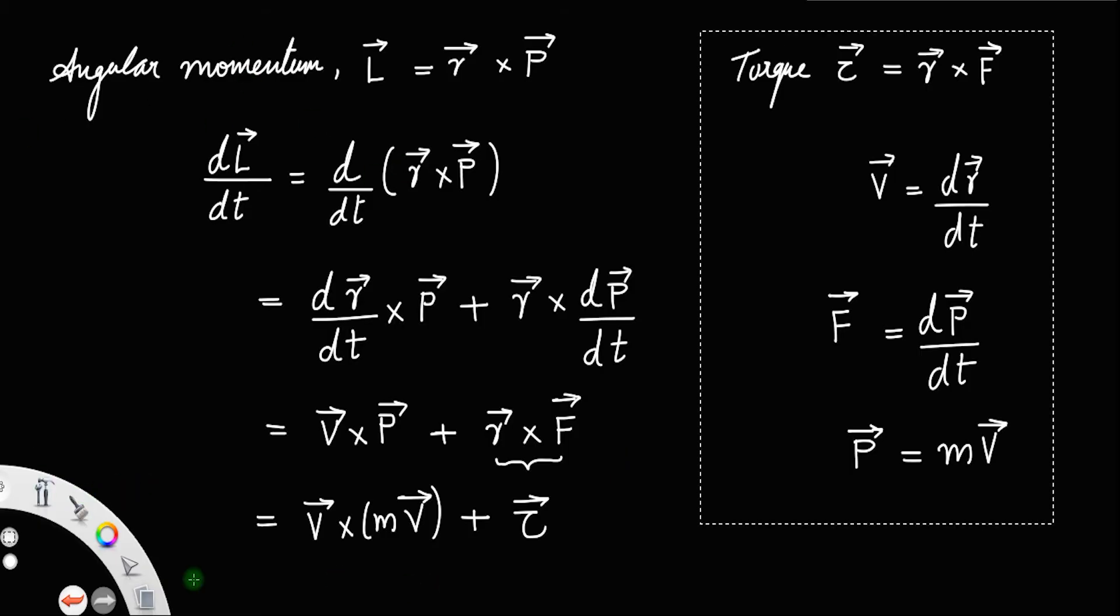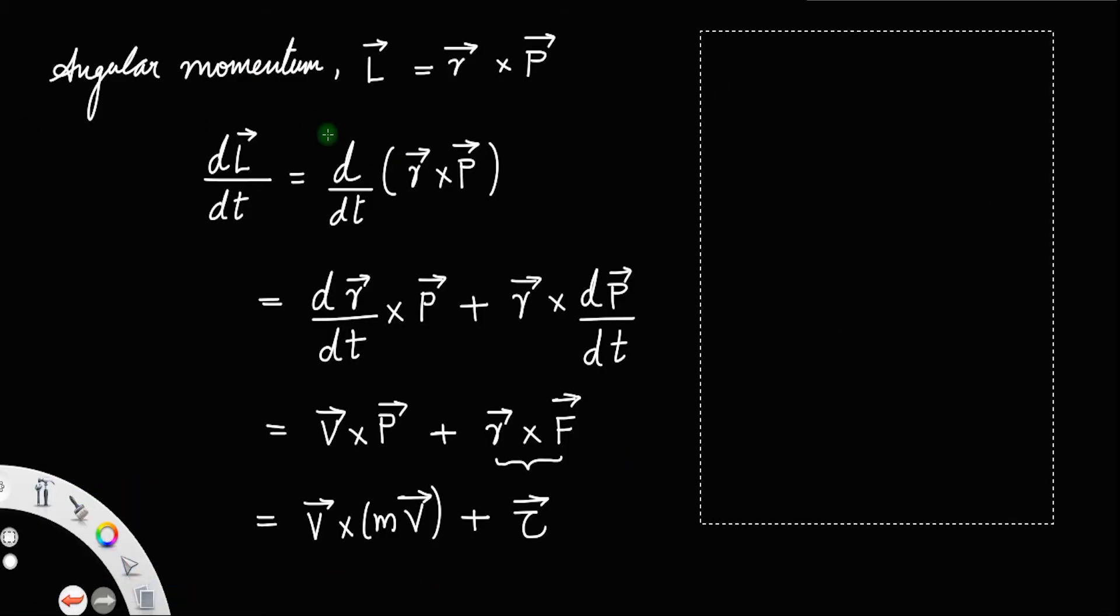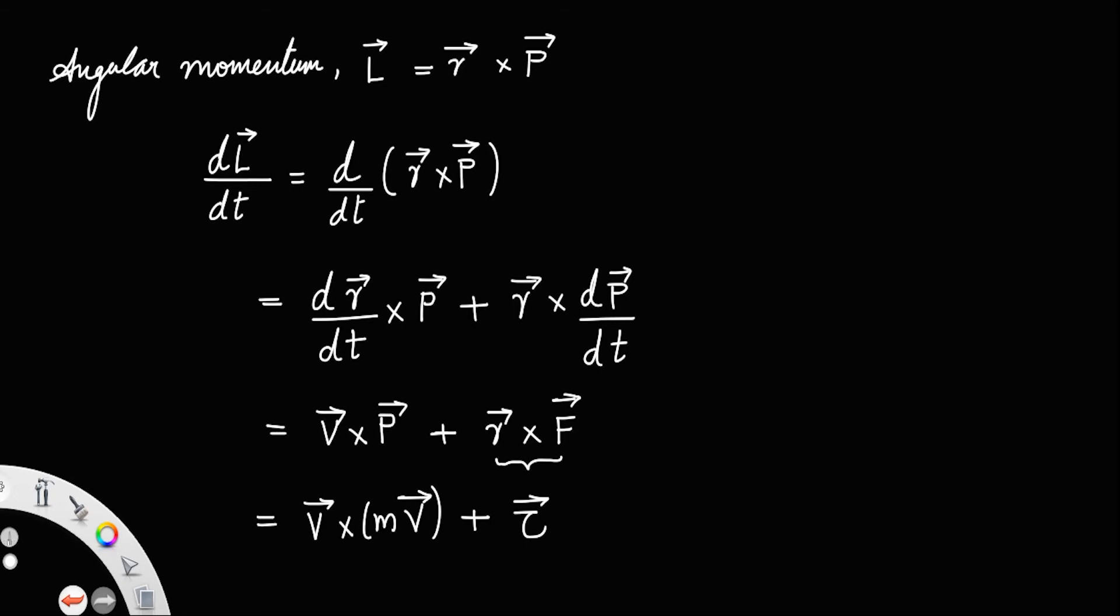Now we have this m, since m is a scalar, you can take that out. So you have dL by dt equal to m into V cross V plus torque.